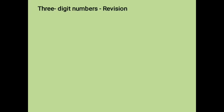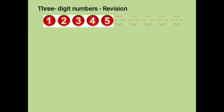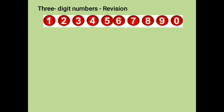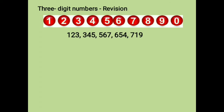Let us revise about three-digit numbers. Here a set of numbers is given; using this set of numbers we have to form a few three-digit numbers. So it can be 123, 345, 567, 654, and 719.